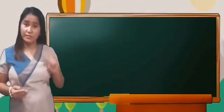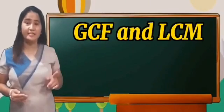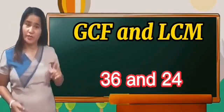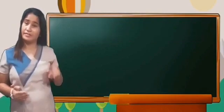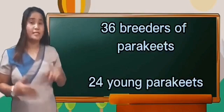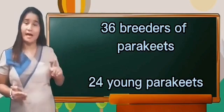Now, I will teach you how to find the GCF and LCM using numbers 36 and 24. That number comes from the 36 breeders of parakeet and 24 young parakeet.